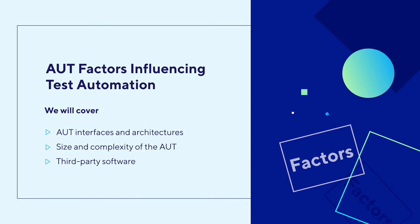In the previous chapter, we've learned the key objective of test automation as well as the potential benefits and risks that come with it. In order to succeed in using test automation, it is important to consider all the factors that influence your implementation. This chapter will walk you through the critical factors that might influence your success.